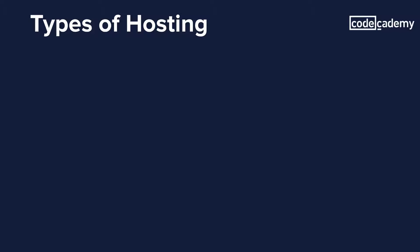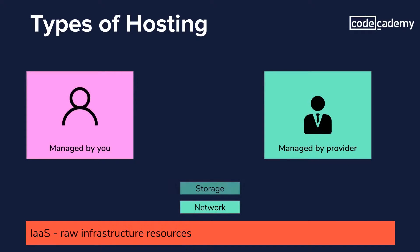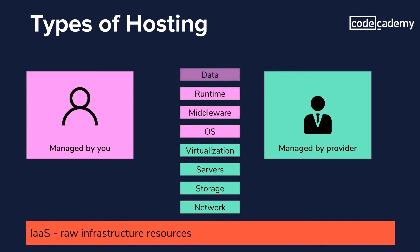In infrastructure as a service, you get raw infrastructure resources. The cloud provider gives you access to servers, storage, and networks, but you have to maintain them — making sure you have the correct operating system, the correct version of your application, all the dependencies, network rules, storage setup, and everything else involved. The cloud provider manages the infrastructure itself, making sure the servers are alive in a data center, that the data center has adequate power, adequate security, adequate network, and everything else a data center could need.